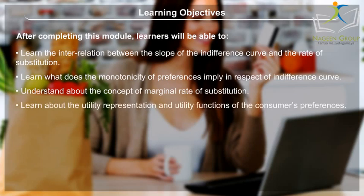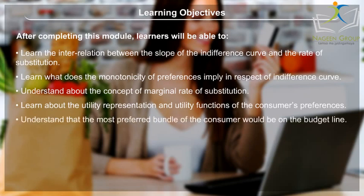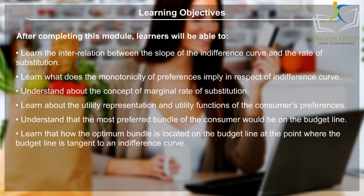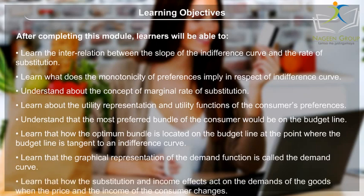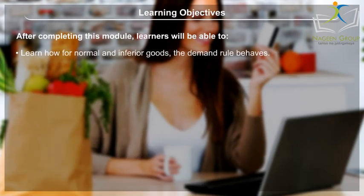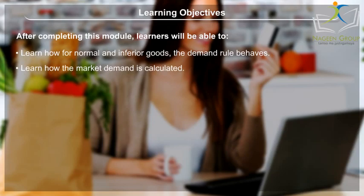Learn about the utility representation and utility functions of the consumer's preferences. Understand that the most preferred bundle of the consumer would be on the budget line. Learn how the optimum bundle is located on the budget line at the point where the budget line is tangent to an indifference curve. Learn that the graphical representation of the demand function is called the demand curve. Learn how the substitution and income effects act on the demands of the goods when the price and income of the consumer changes. Learn how for normal and inferior goods the demand rule behaves, and how the market demand is calculated.